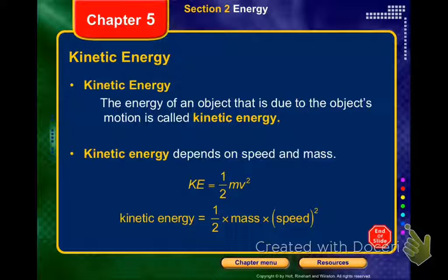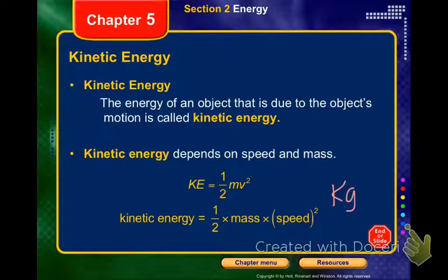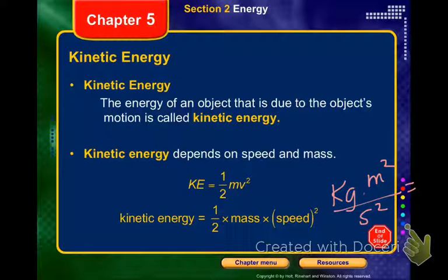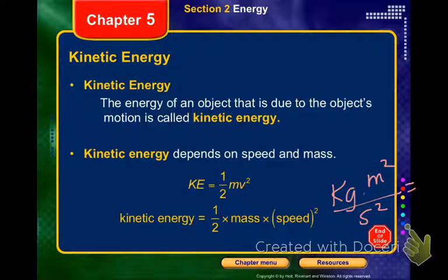What do you think that's going to be equal to? Kilograms times meters squared over seconds squared — that's going to be the same as what? Newton was kilogram times meter over seconds squared. Yesterday we talked about work. Kinetic energy, we're going to involve that with our work today. And it is joules.